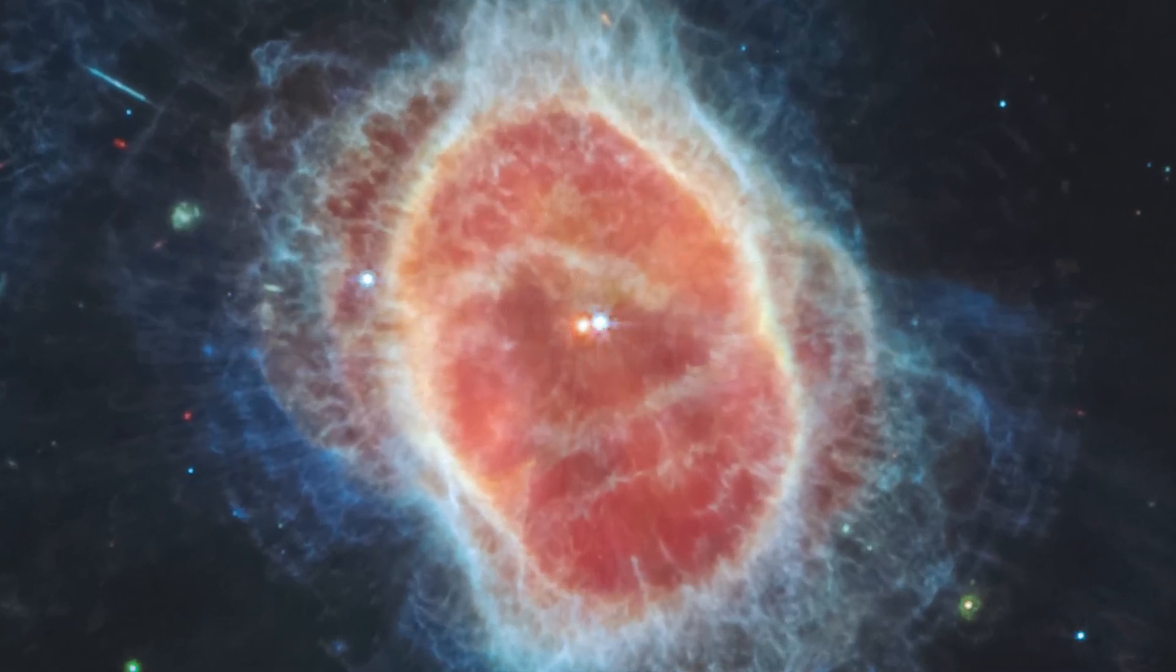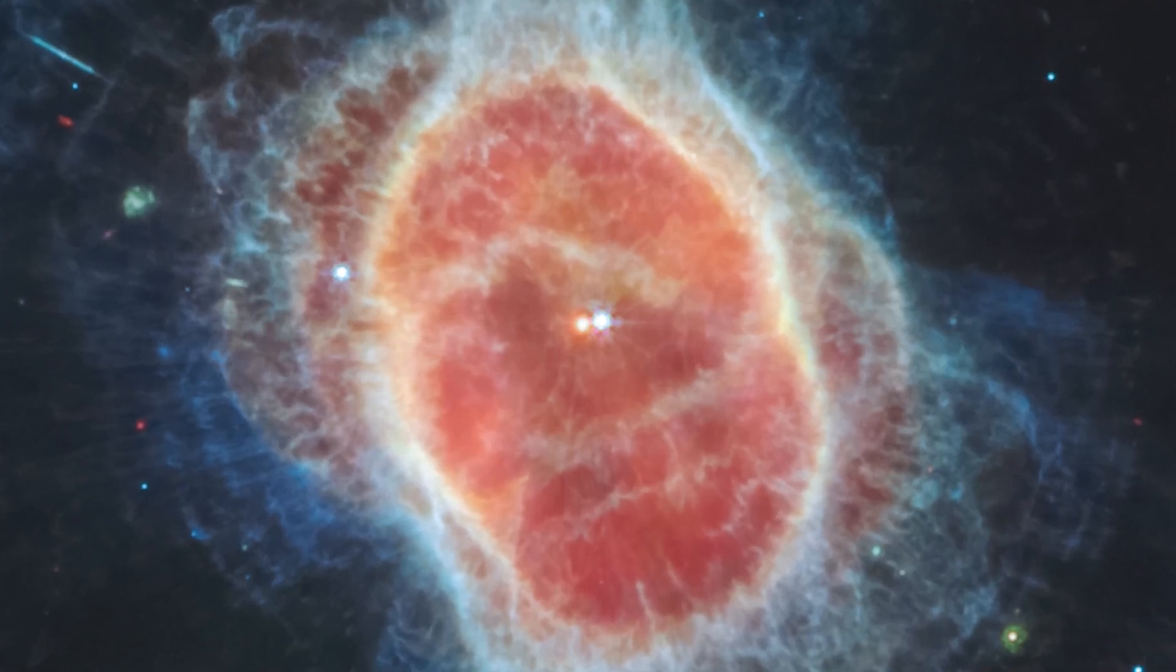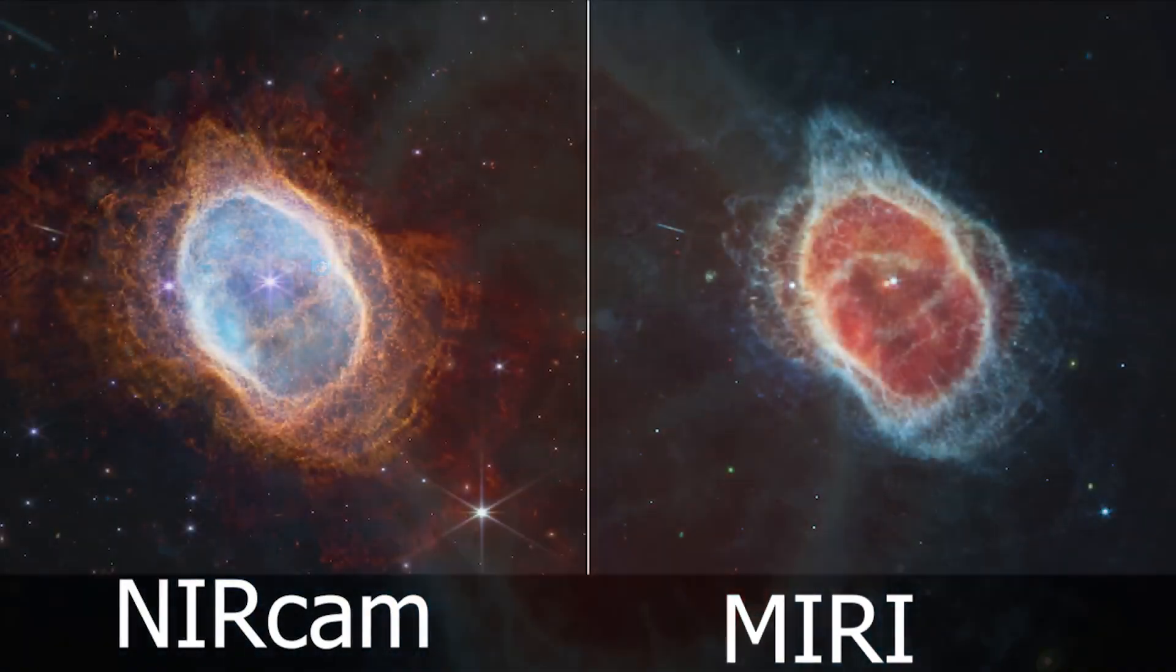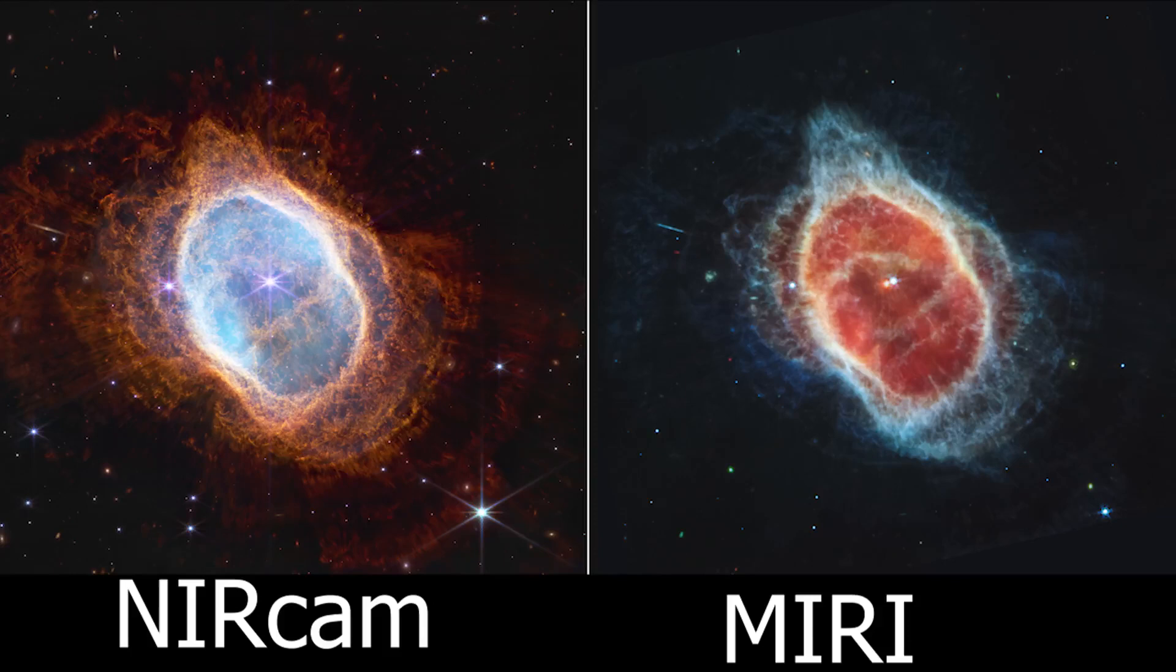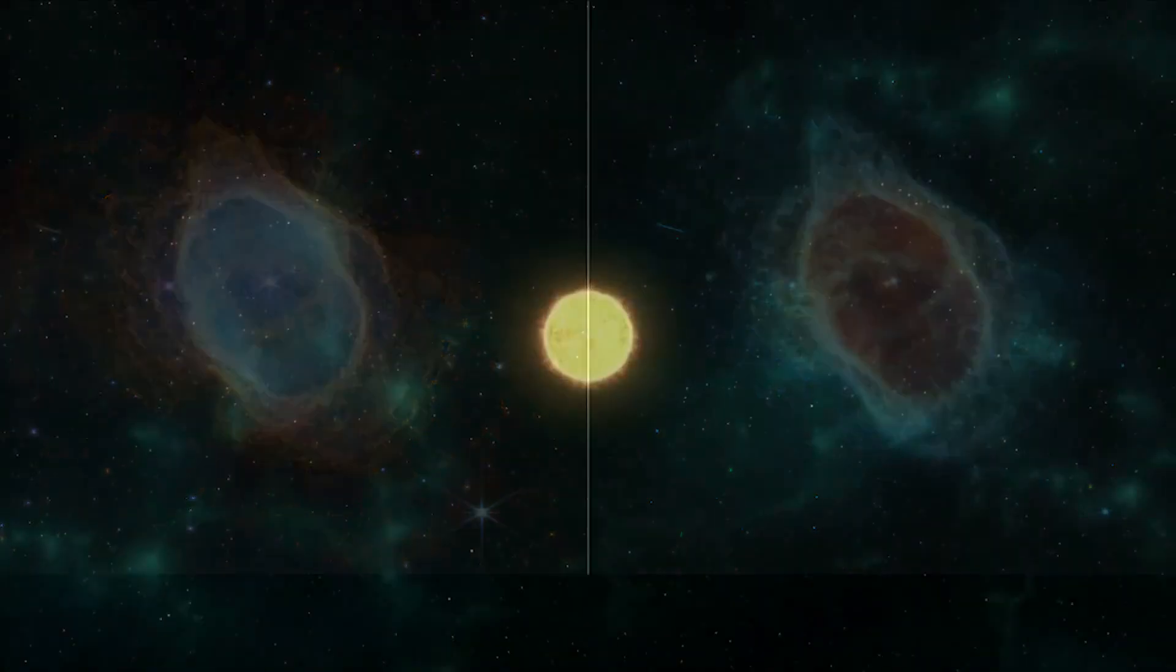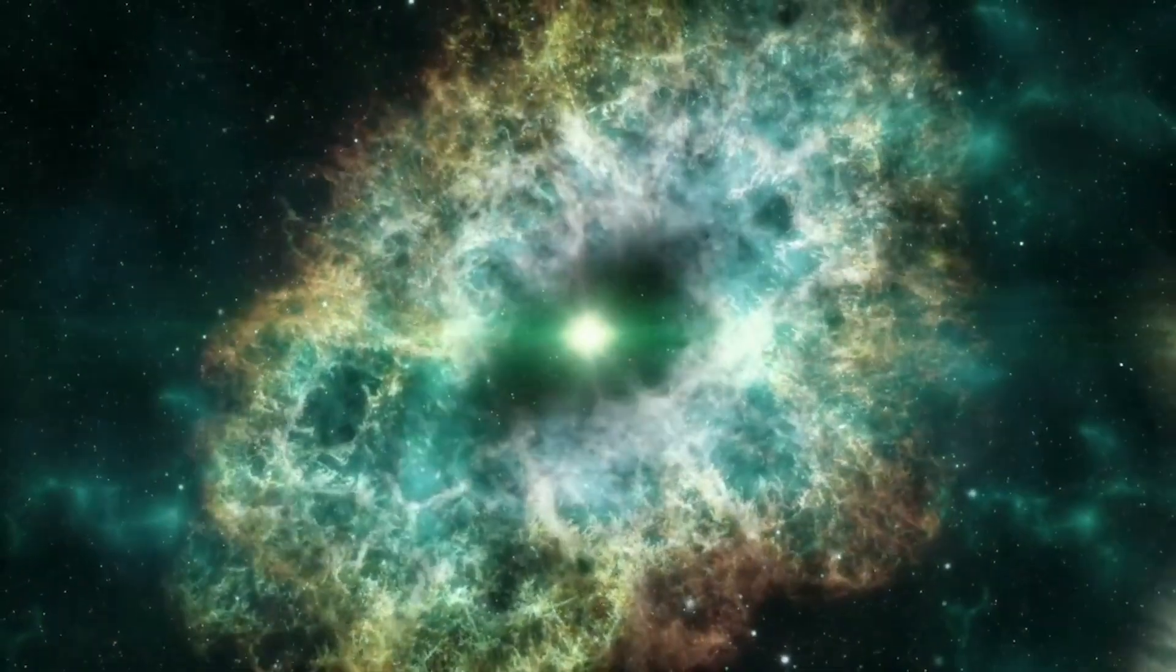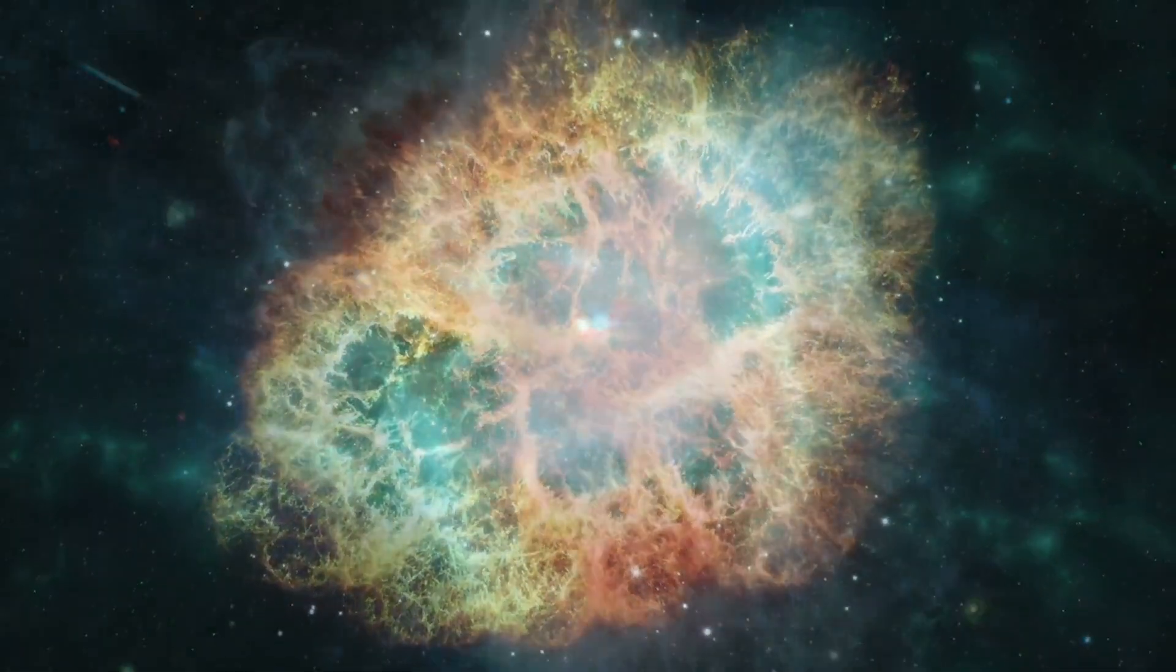The next Webb image is of a planetary nebula—a dying star about 2,500 light-years away known as the Southern Ring Nebula. NASA released two images of this nebula: one captured by the near-infrared camera, or NIRCam, and the other by the mid-infrared camera, or MIRI. A planetary nebula forms when a sun-like star ejects their outer layers at the end of their life. This cloak of dust around the second star, shown at left in red at the center of the Southern Ring Nebula, is a hot, dense white dwarf star.